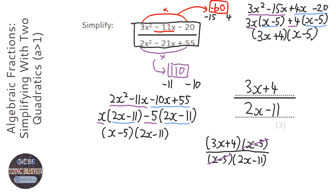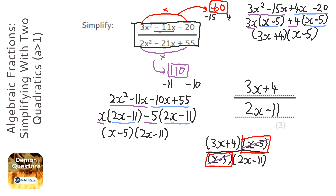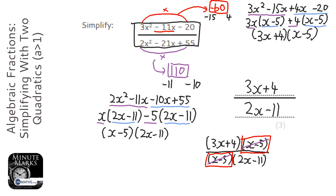A little hint: when simplifying algebraic fractions, you'll pretty much always get a bracket at the top and bottom to cross out at the end — otherwise you can't simplify it. So if you've done the top, you can actually cheat a little bit and work out that the bracket at the bottom will either be 3x plus 4 or x minus 5, and that can help speed things up. You can also check your answer, because if you don't have a repeating bracket at the top and bottom, you've probably done something wrong.